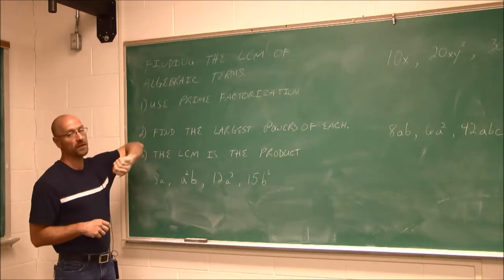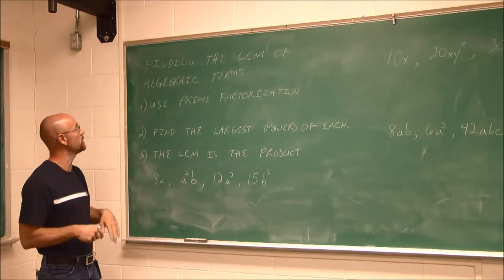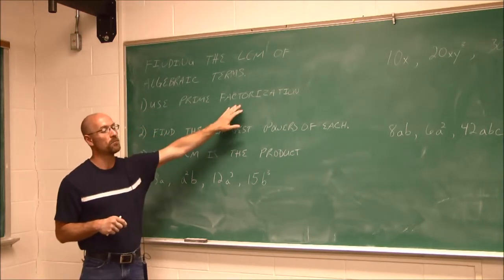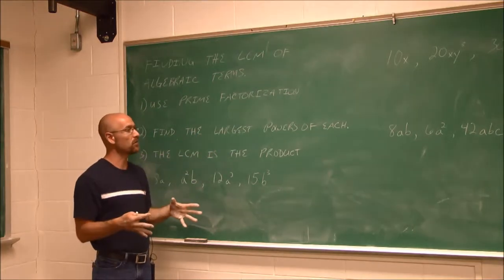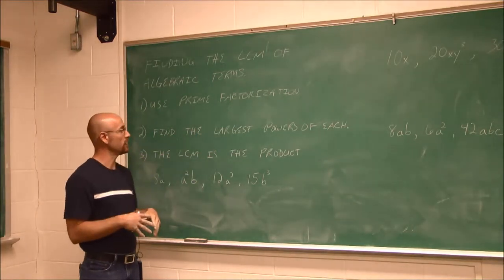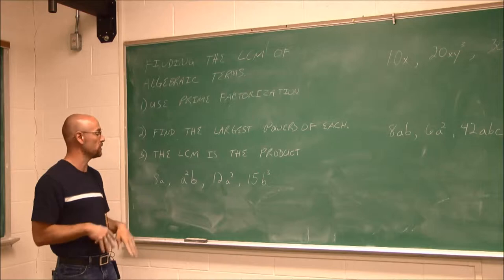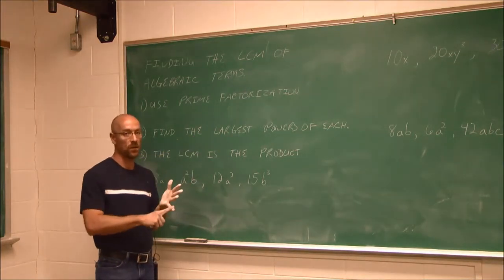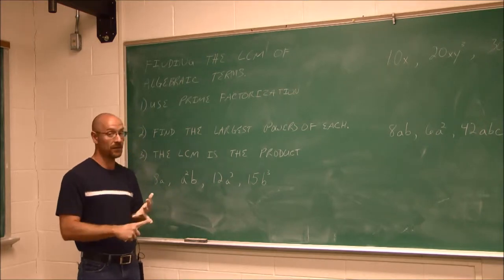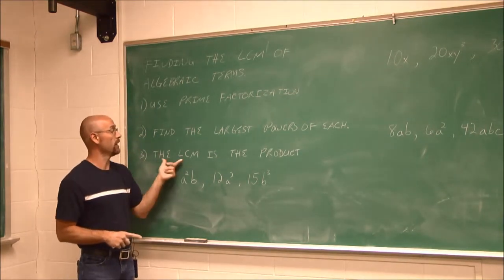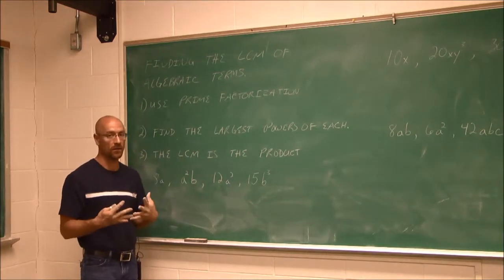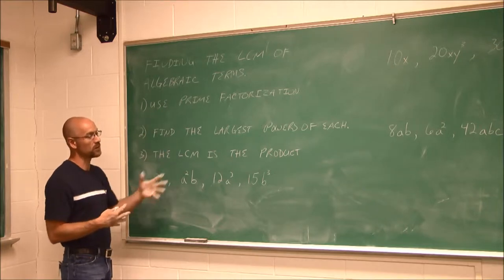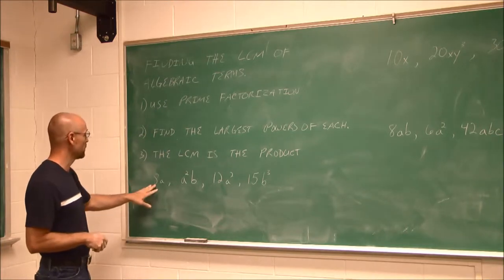So to apply it to algebraic terms, it's very similar to what we did with numbers. The first step is use prime factorization. Break the numbers down, the coefficients, so then you just have to deal with the variables. Find the largest power of each, including the coefficients and the variables. And then the LCM is the product of all of these values. So let's look at an example, because the example's going to help illustrate what we're trying to communicate here.